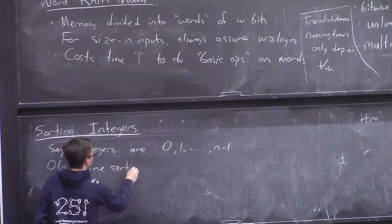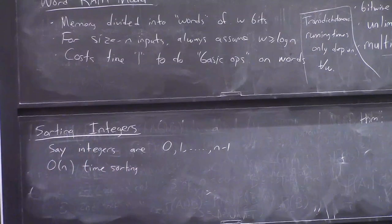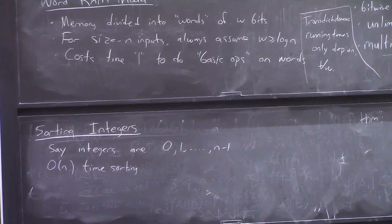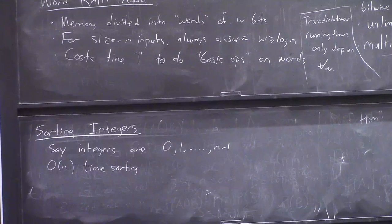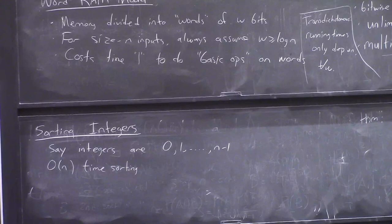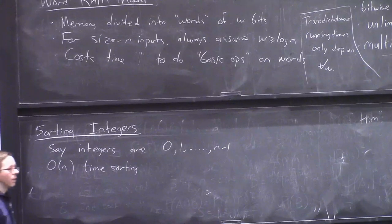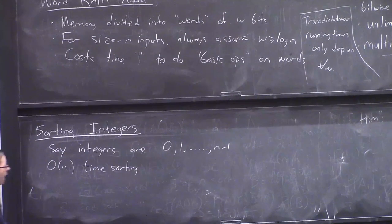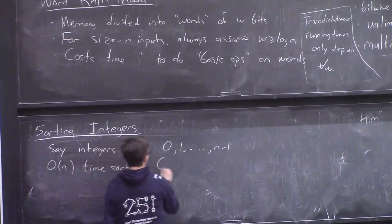And let's assume for the moment that we're in the model I like where W is like theta of log n. So you're sorting log n bit integers. Now let's warm up by assuming that the integers you're sorting for now are actually literally log n bits in the sense that they're numbers between 0 and n, n minus 1. There's a very easy order n time sorting algorithm. If you're given n numbers between 0 and n, does anybody want to suggest it?